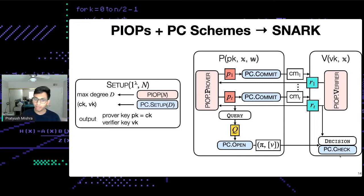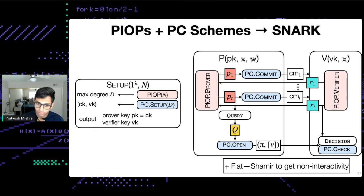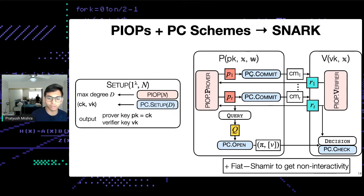These evaluations are plugged into the PIOP decision and PC check algorithms. If both accept, the SNARK verifier as a whole accepts. The verifier checks both the evaluations and the opening proofs. The soundness error is basically the soundness error of the PIOP plus the soundness error of the PC scheme. You can then apply Fiat-Shamir to make it non-interactive.